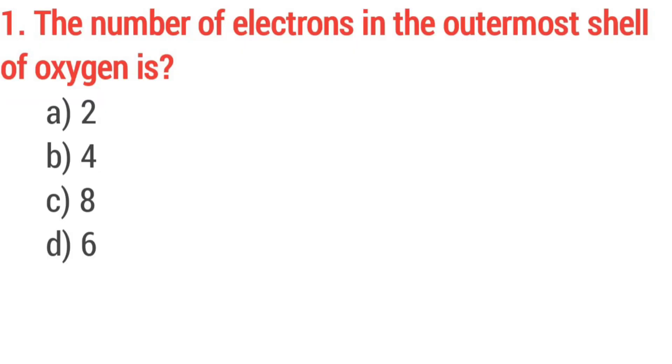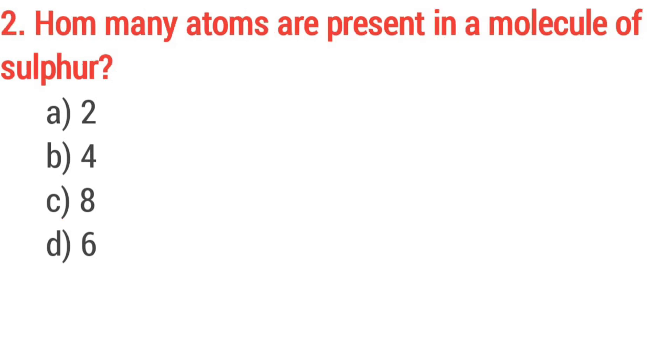Question number 1. The number of electrons in the outermost shell of oxygen is? Option D, 6. Question number 2. How many atoms are present in a molecule of sulfur? Option C, 8.